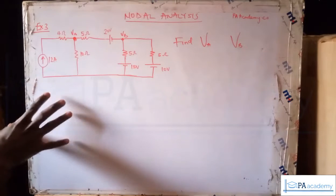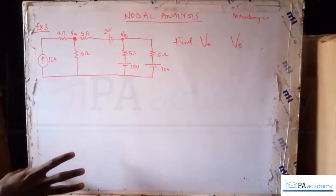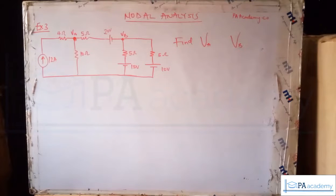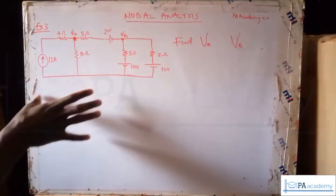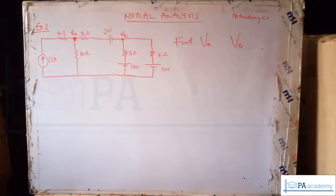Now let's follow the step-by-step process I gave earlier on how to solve nodal analysis. The first thing you do is identify how many nodes you have in that particular circuit. So I want you to look at this circuit — how many nodes do you think are in this circuit? Take your time to look at it closely and write it down.